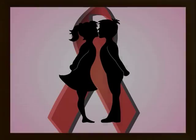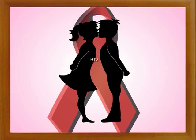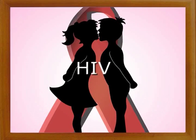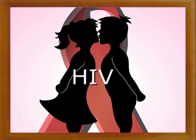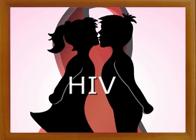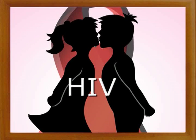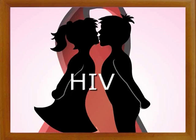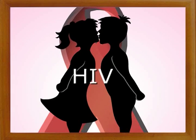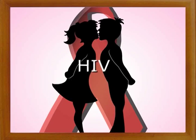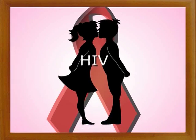Transmission of HIV occurs by four main routes. Sexual mode of transmission is the most common route for spread of infection. The risk of acquiring the infection is more in persons having unprotected sex. The risk is also very high in the presence of sexually transmitted diseases, or STDs.